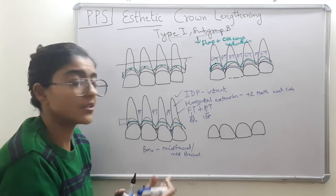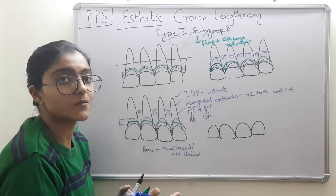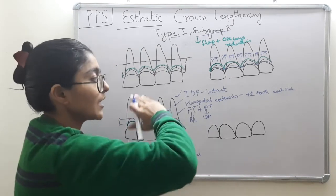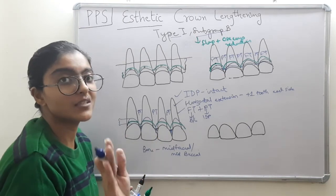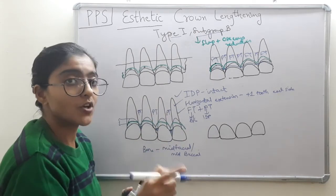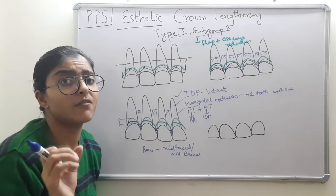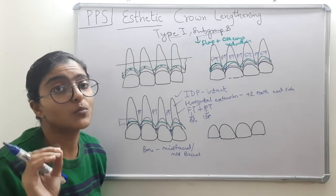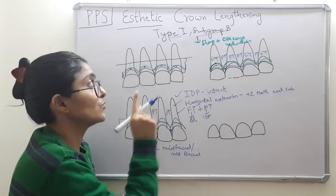Remember: you cannot do anything in the interproximal region because it is partial-thickness reflection — the bone is only accessible on the facial aspect. The interproximal osseous architecture is not touched to avoid creating black triangles. Reconstruction of interdental papilla is to this day the most difficult procedure, so please do not manipulate the interdental papilla during aesthetic procedures.